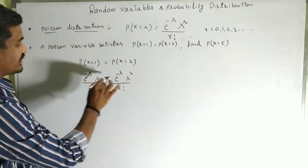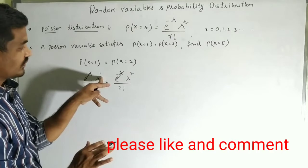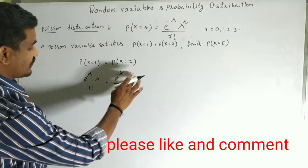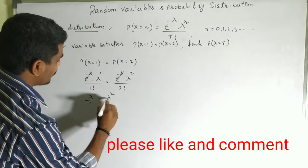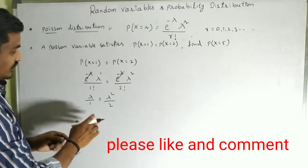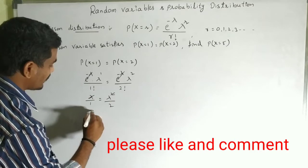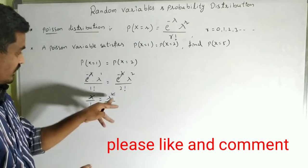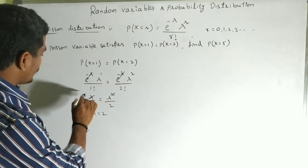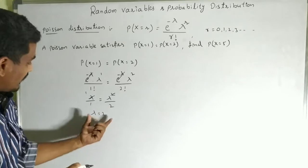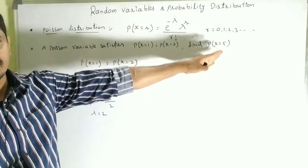The e^(−λ) on both sides cancels. We get λ^1 / 1! = λ^2 / 2!. Simplifying, λ cancels and we get 1 = λ / 2, so λ = 2.